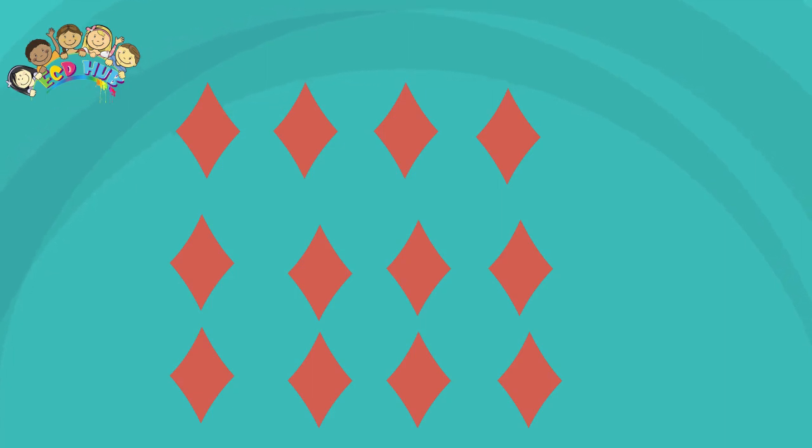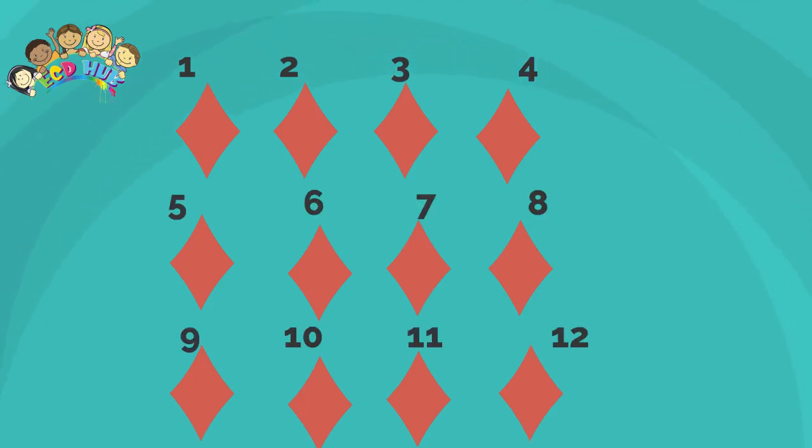First we should try both types of counting. Let's start: 1, 2, 3, 4, 5, 6, 7, 8, 9, 10, 11, 12. Good, we have 12 diamond shapes. But this way of counting takes longer time.